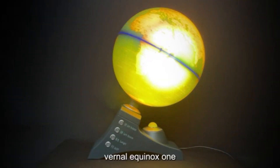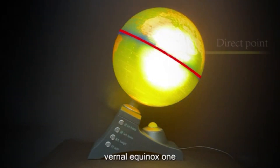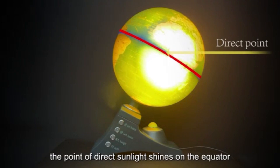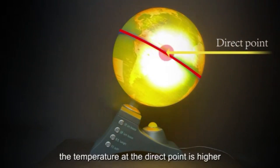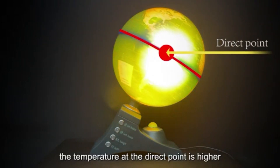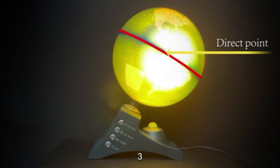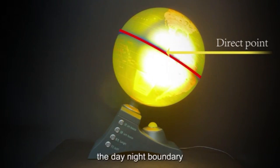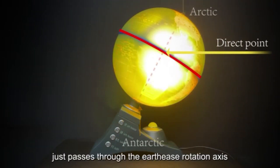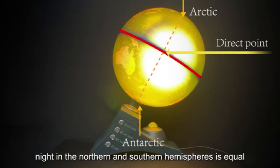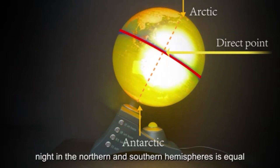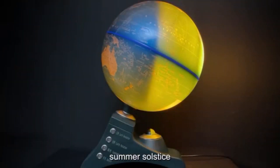Vernal Equinox: The point of direct sunlight shines on the equator, and the temperature at the direct point is higher. The day-night boundary just passes through the Earth's rotation axis and the north and south poles, so the time of day and night in the northern and southern hemispheres is equal.